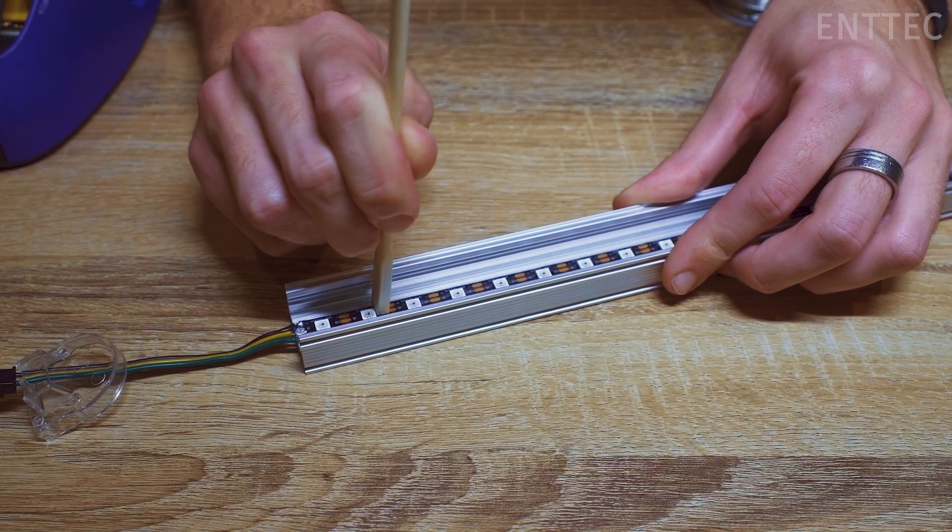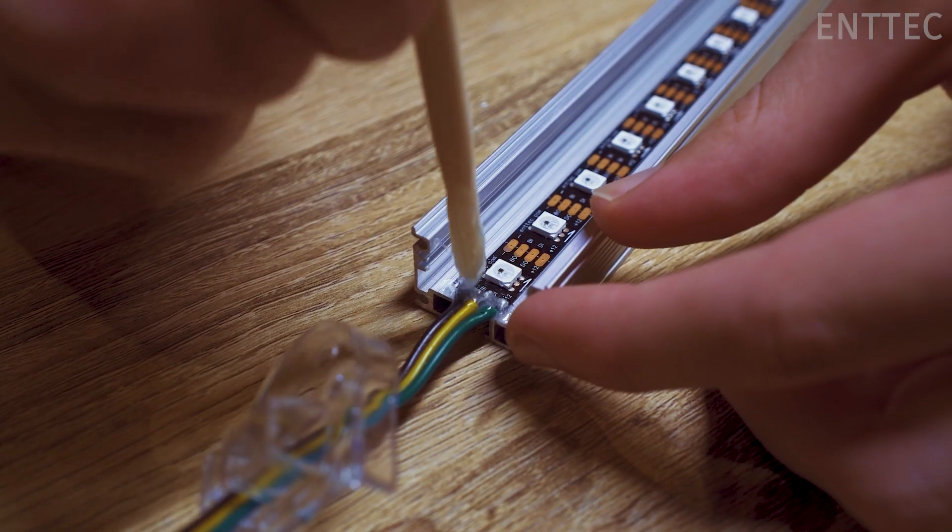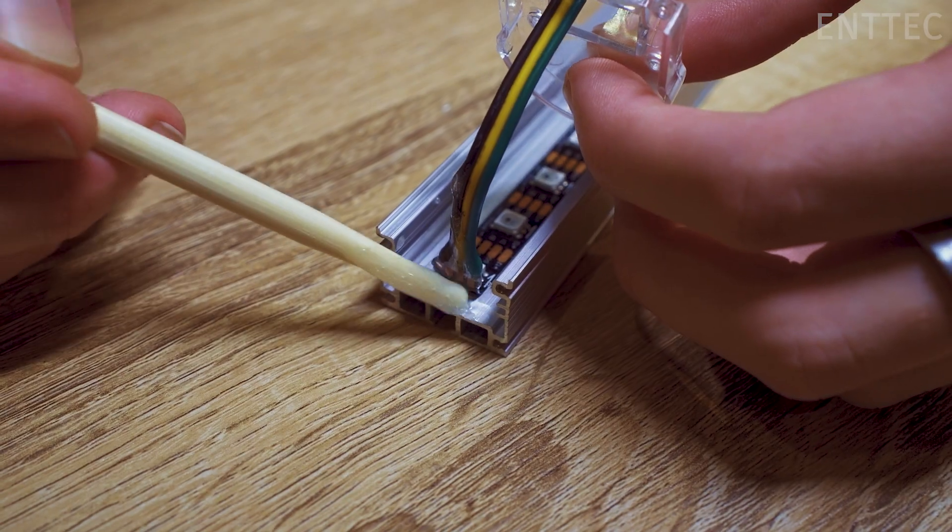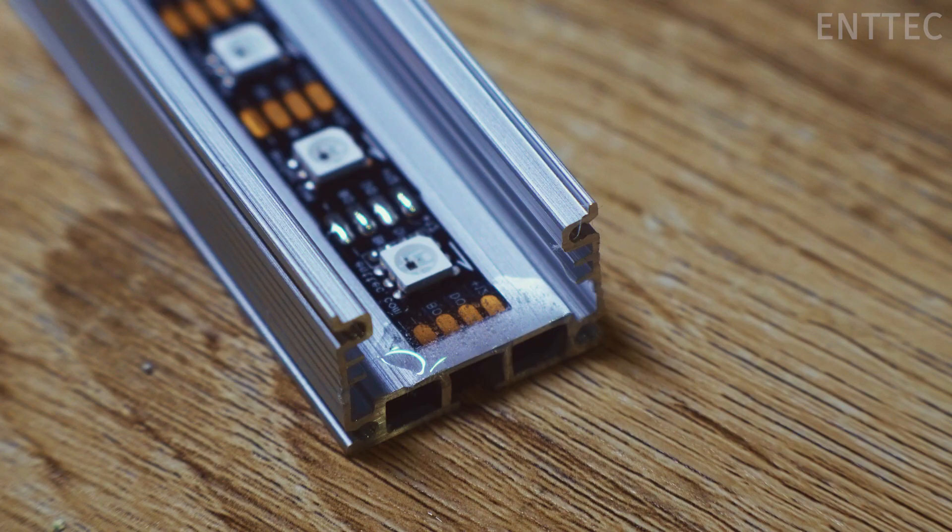Now that your LED tape is stuck down, you can choose to add some epoxy for some extra adhesive strength. This is an optional step, but personally, I like to add a little bit of epoxy to the top and tail of my LED strip.